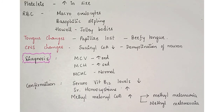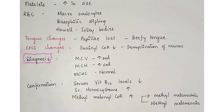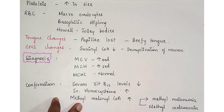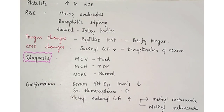The treatment will be covered at the end of all three anemias. In the next video — Part 2 of Megaloblastic Anemias — we will study pernicious anemia and folate deficiency anemia.